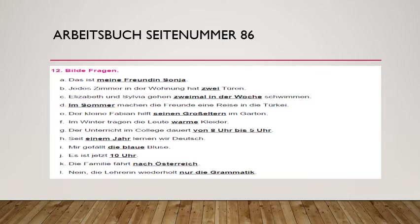Example C: 'Elisabeth und Sylvia gehen zweimal in der Woche' — they both go swimming twice a week. Whenever 'twice', 'thrice', or 'four times' is mentioned, the question automatically becomes 'how often do they go?' For 'how often', the WH question word is 'wie oft'. So: 'Wie oft gehen Elisabeth und Sylvia schwimmen?' Remember: first WH question, then verb, then subject, then whatever is left.